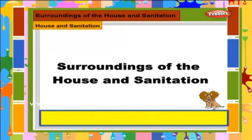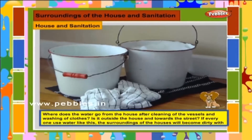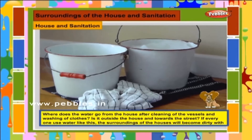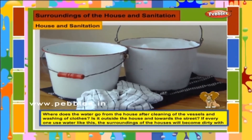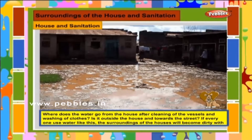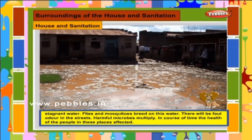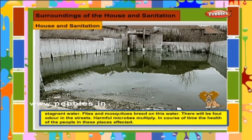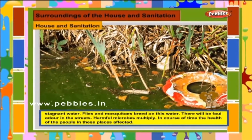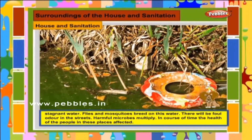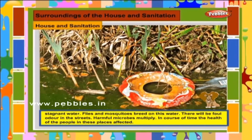Surroundings of the house and sanitation: where does the water go from the house after cleaning vessels and washing clothes? If it flows outside toward the street, the surroundings of the houses will become dirty with stagnant water. Flies and mosquitoes breed on this water, there will be foul odour in the streets, and harmful microbes multiply. In course of time, the health of the people in these places is affected.